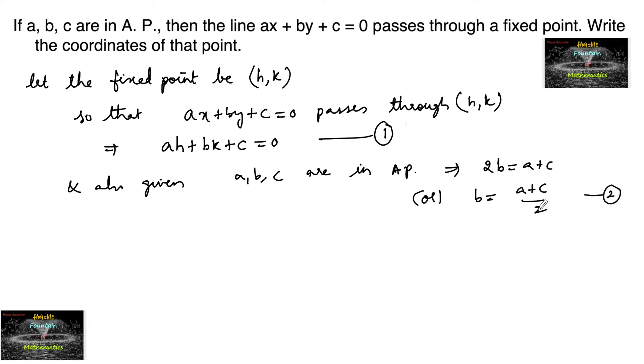So let us substitute B equals A plus C upon 2 in the first equation. From 1 and 2, A into H plus A plus C upon 2 into K plus C equals 0. Which implies 2AH plus AK plus CK plus 2C equals 0, or we can write by taking A common.